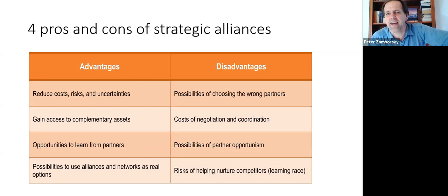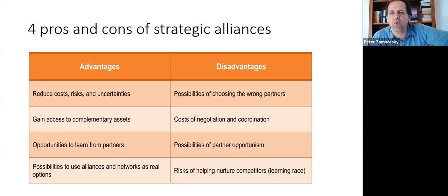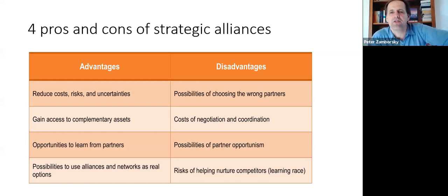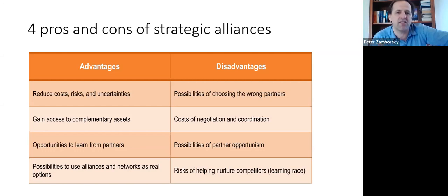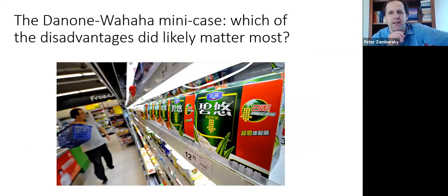On the other hand, there are potential risks. You can choose the wrong partner. Coordinating the relationship can be clumsy, and even negotiating the deal is costly. There's the potential for partner opportunism — cheating or not sticking to the agreement. And the opposite of learning from partners is partners learning too much from you and perhaps becoming a competitor.